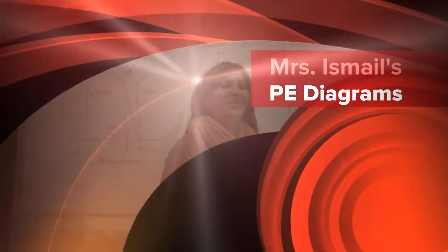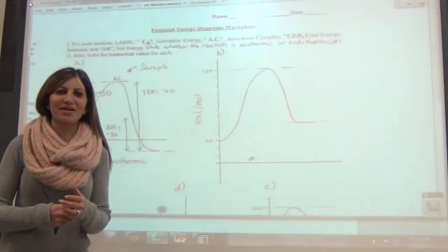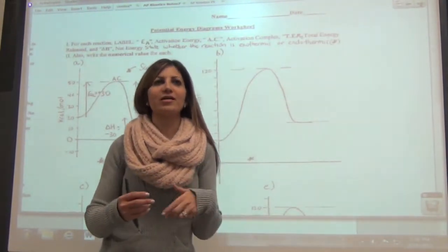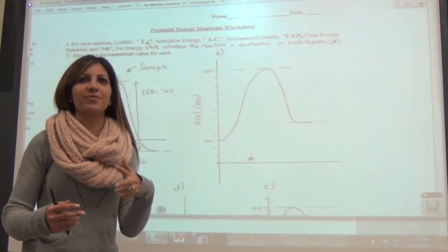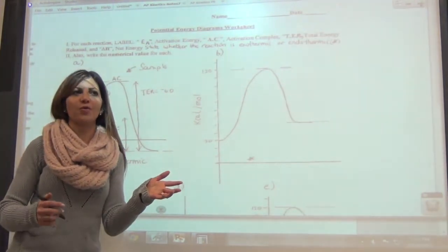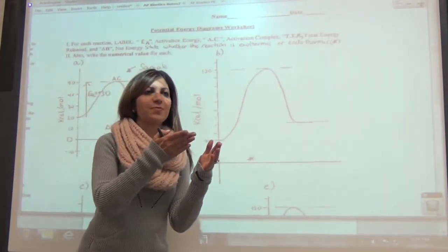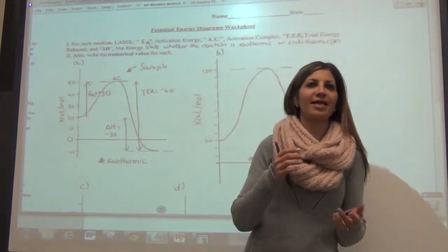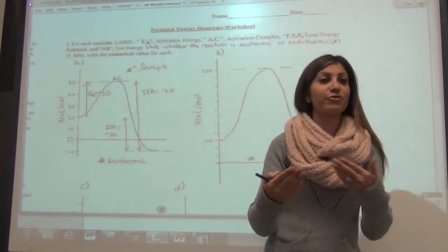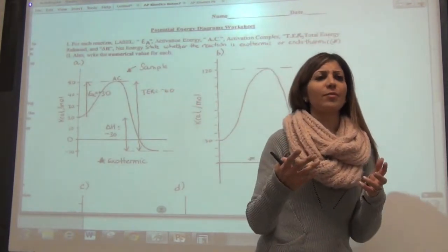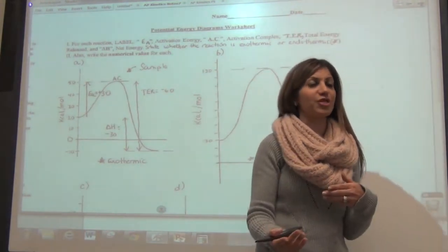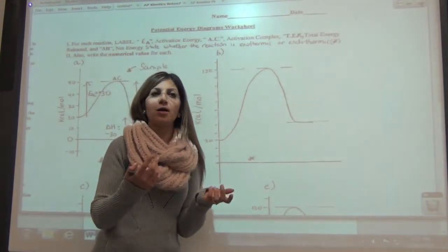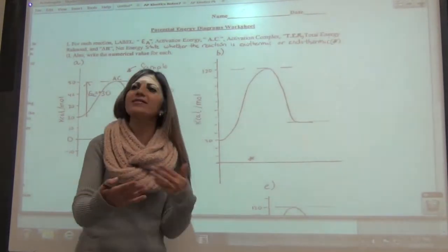Alright, welcome everyone! Today we're going to be talking about reaction mechanisms and looking at potential energy diagrams to figure out whether a reaction is exothermic or endothermic. We'll label these PE diagrams to identify net energy — whether it's positive or negative — as well as the activated complex, activation energy, total energy released, and how a catalyst changes things.